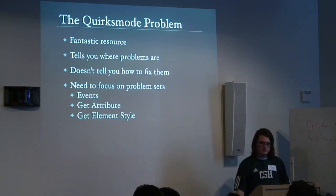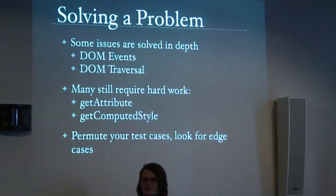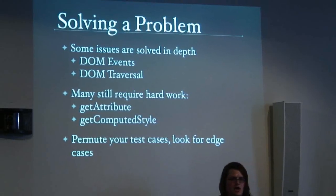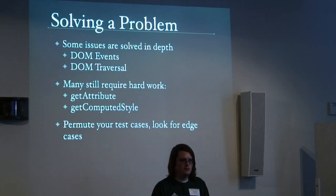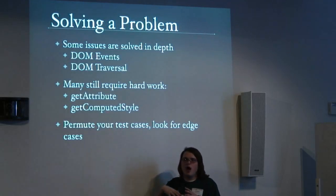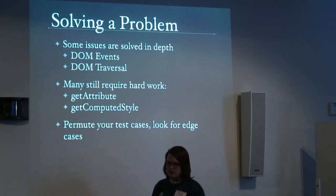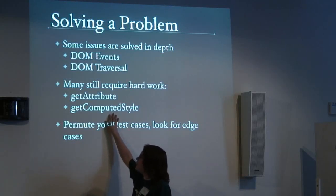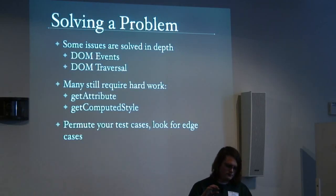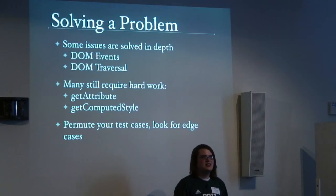There are a couple of problem sets I consider to be solved: DOM events and DOM traversal are pretty well thought out with good documentation available. But there are a lot that still require tremendous amounts of hard work. Getting an attribute value out of an element is very close to being solved — the Prototype guys are making good progress, we're making progress too. The one I haven't seen anyone tackle yet but we're starting to now is getting a computed style — figuring out how an element currently looks. It is a fantastically hard problem because no browser has even attempted to standardize on anything since there is nothing to standardize on.